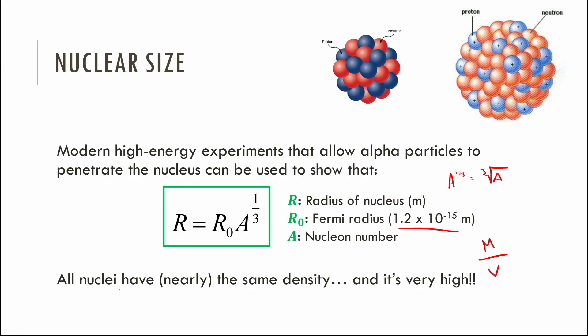Roughly speaking, all nuclei have the same density — the density of a carbon nucleus is the same as the density of a uranium nucleus; there are just more nucleons. It's about as dense as anything can be without becoming a black hole — really, really, really high density, because all that matter is packed into a very small space. If they ask about the size or density of a nucleus, think mass over volume and volume of a sphere.